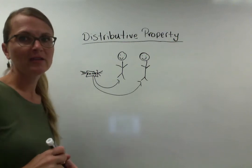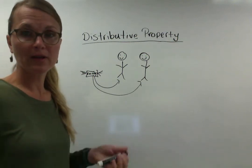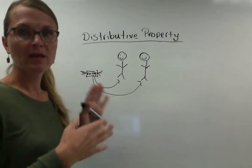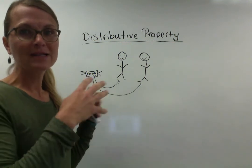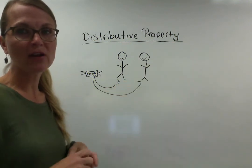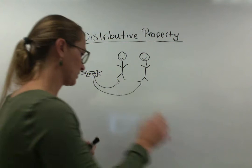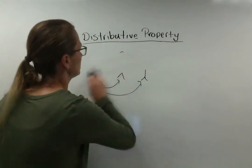Okay so basically distributive property with numbers is we can break numbers apart and we can split and share numbers with each other. We can distribute.